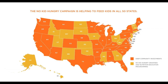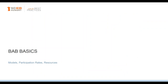Here's the map of where No Kid Hungry is. We are proud to be across the country. The orange states have deep community investments, and the yellow states have grants and nutrition education programming. So we're really proud of our work across the nation.